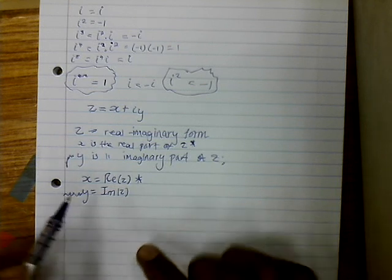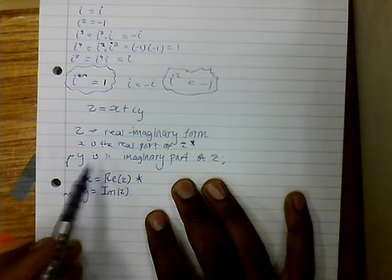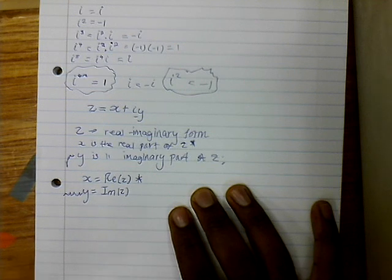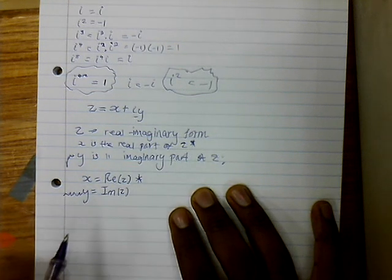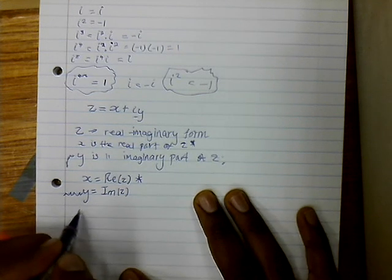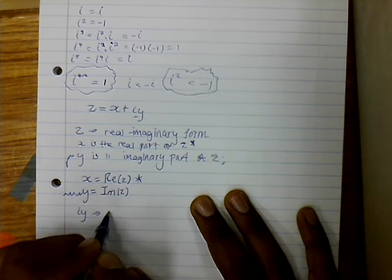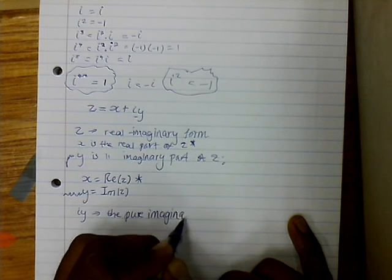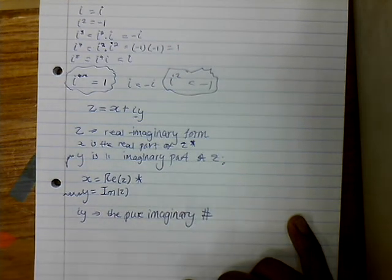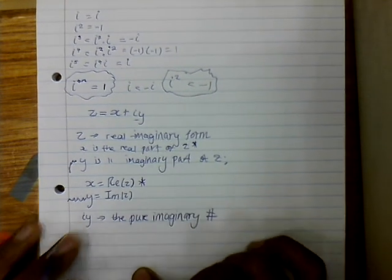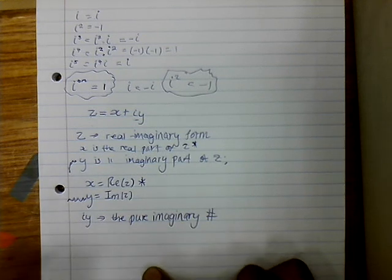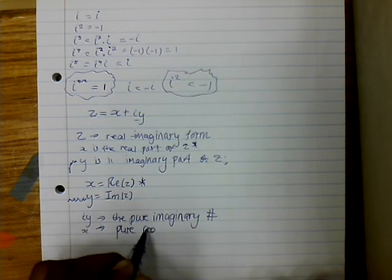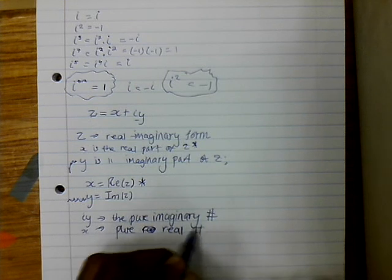Before we go to conjugation, let us define iy. Because we said y is the imaginary part of z, iy is the pure imaginary number — it's not a part, it's a number. And then x is the pure real number.